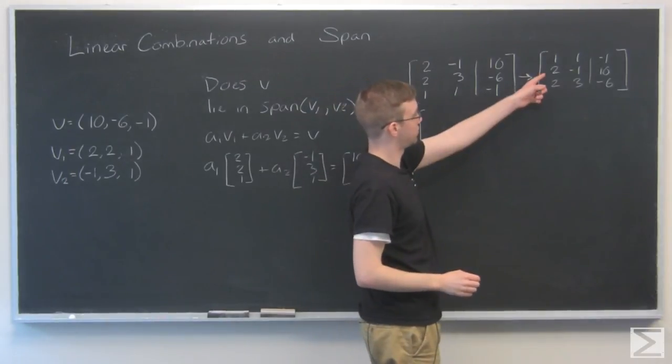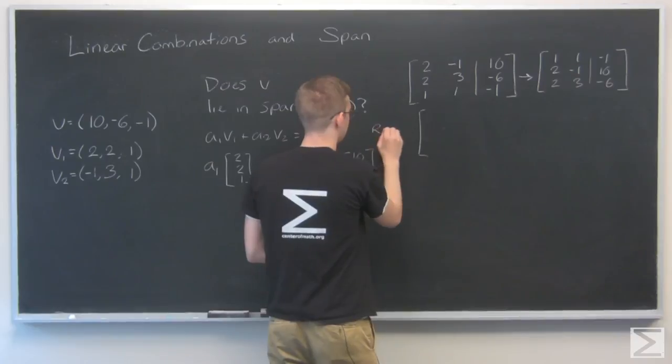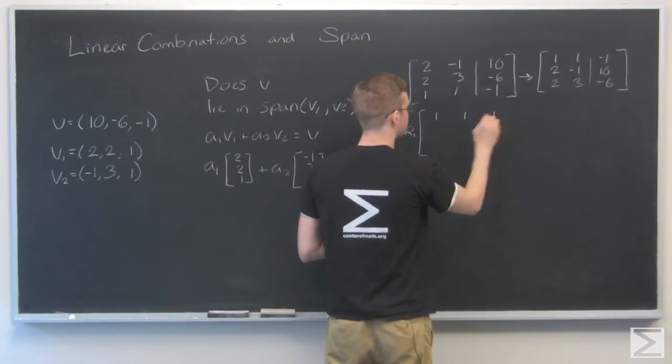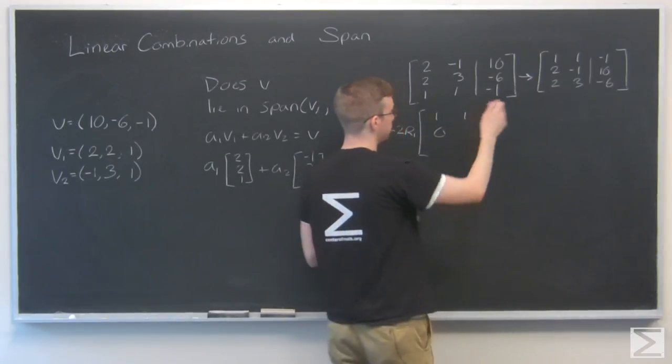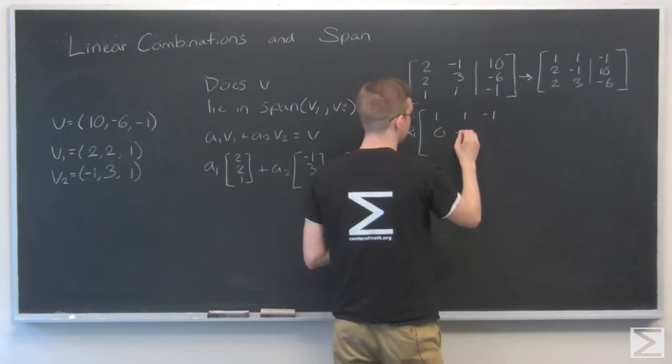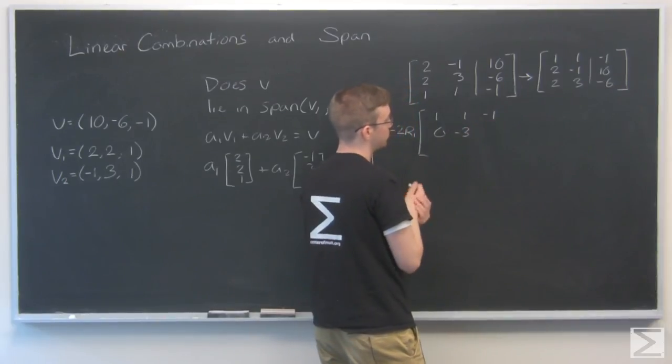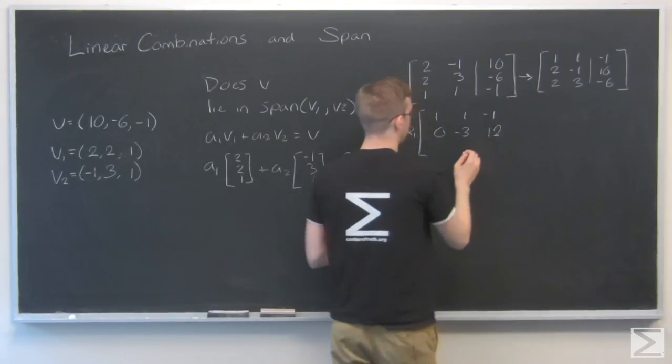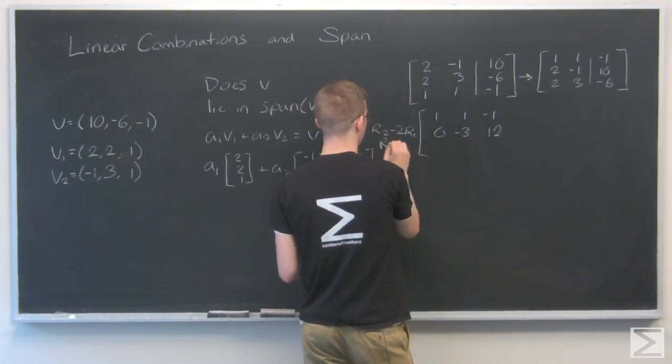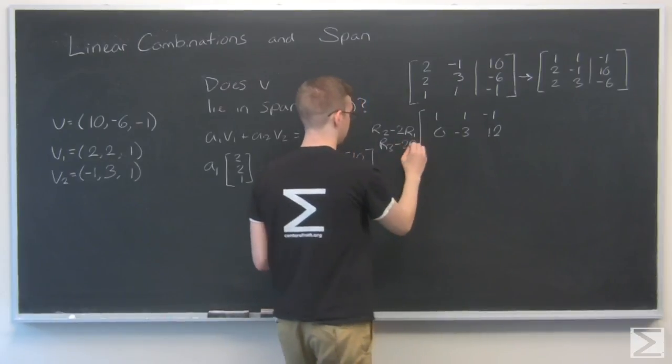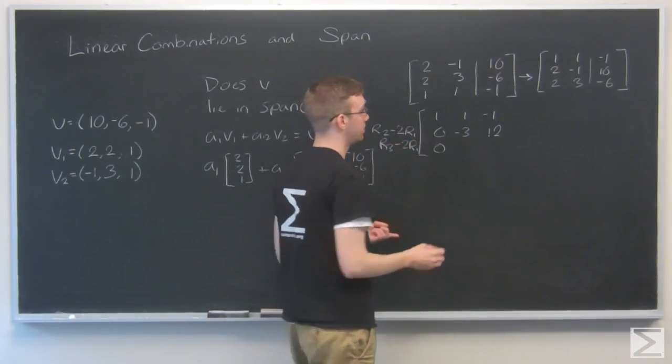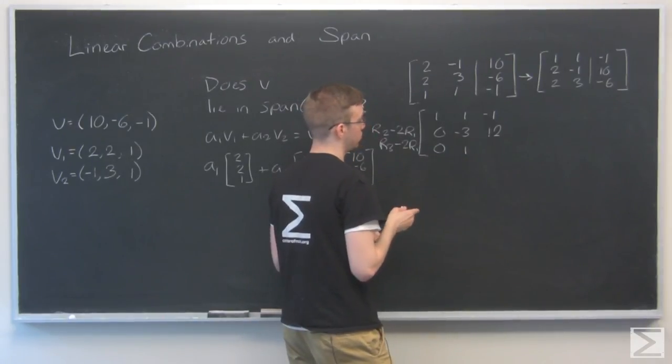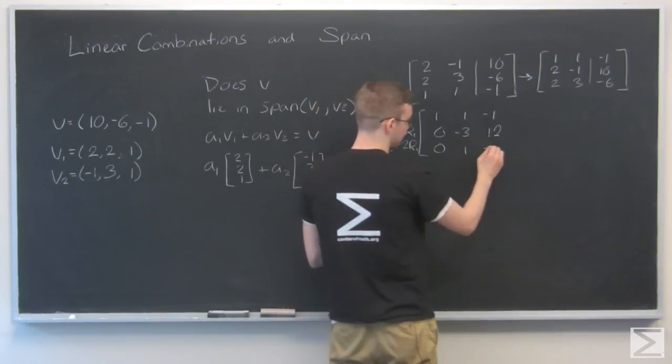So now I'll take row 2 and subtract the first row twice. That's row 2 minus 2 times the first row. Minus 1 minus 2 is minus 3. 10 minus 2 times minus 1, that's 10 plus 2, that's 12. And I'm going to do the same thing with this last row. Row 3 minus 2 times the first row. So that will be 0. 3 minus 2 is 1. Minus 6. Minus 2 times minus 1, that's minus 6 plus 2, that's minus 4.